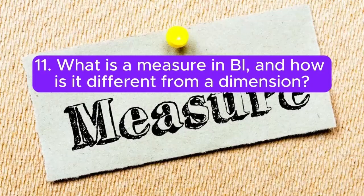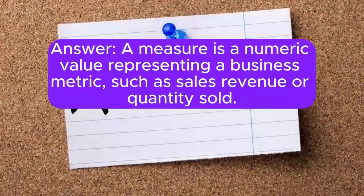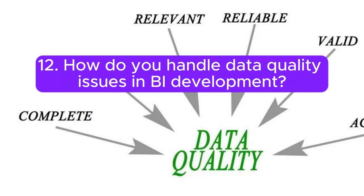Question 11: What is a measure in BI, and how is it different from a dimension? Answer: A measure is a numeric value representing a business metric, such as sales, revenue, or quantity sold. Dimensions provide context and include attributes like product, customer, or date.